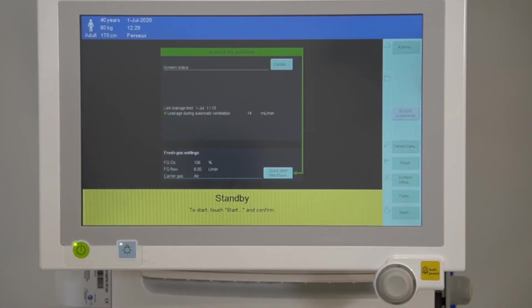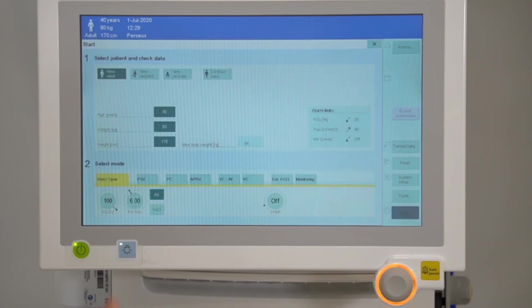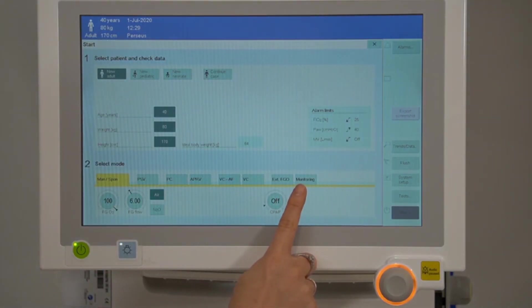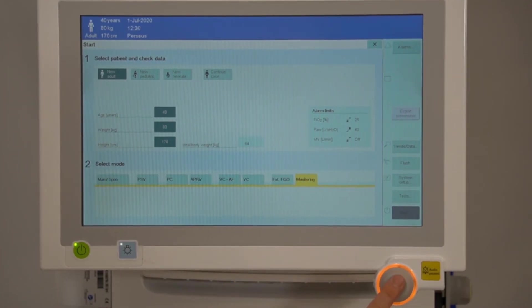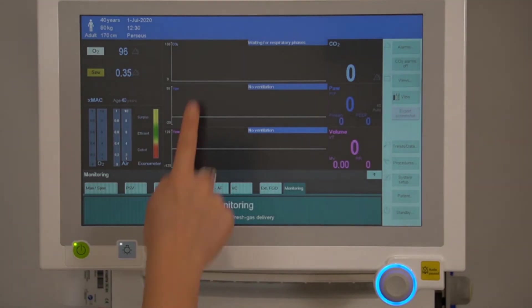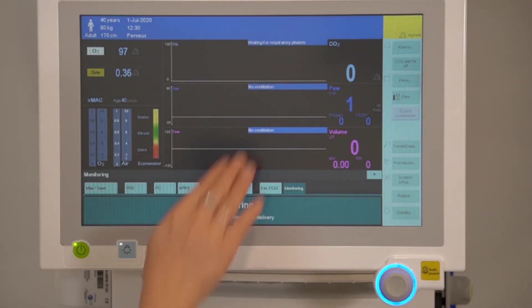For users with the newer software, you will have a monitoring mode available. This is similar to pause mode. Selecting this will allow you to monitor CO2 but pause all other alarms. There will be no ventilation or fresh gas delivery.